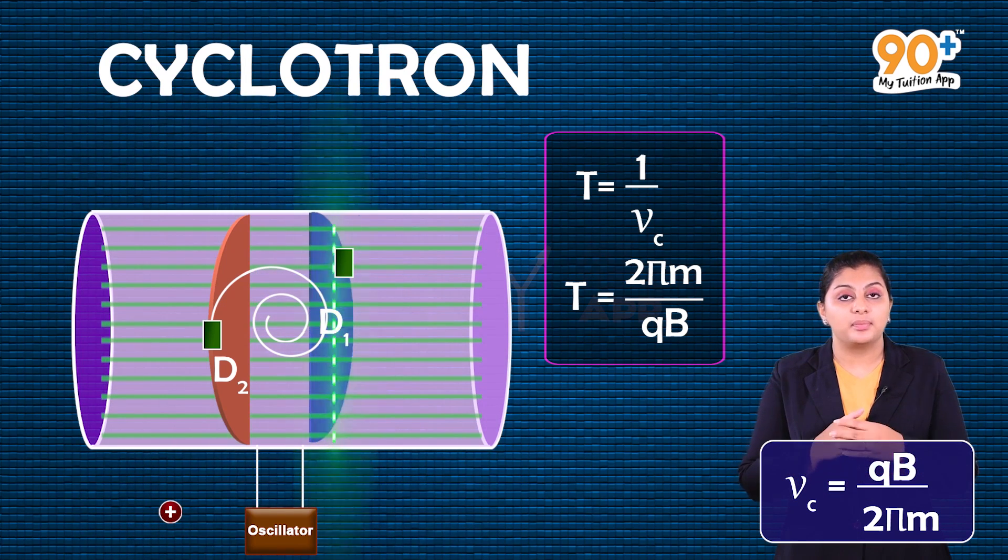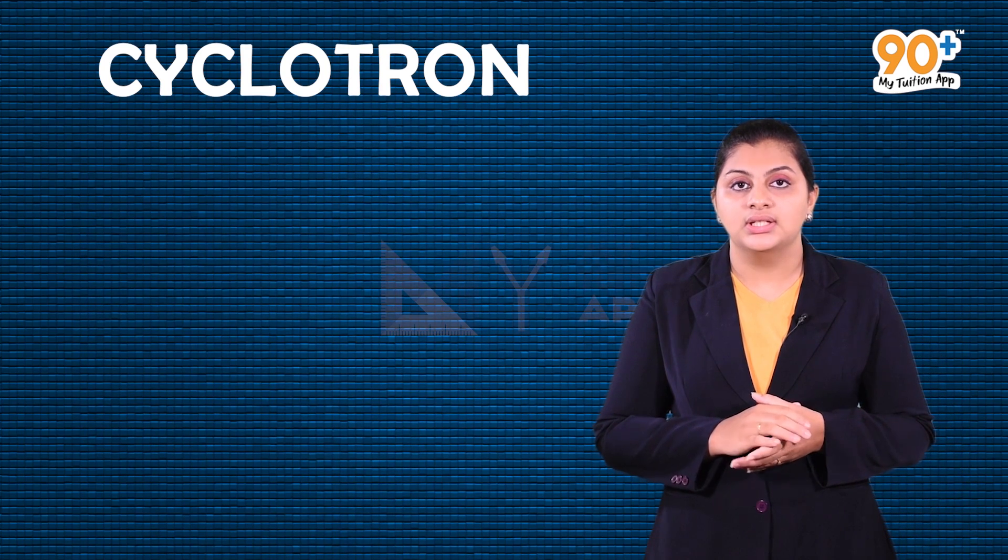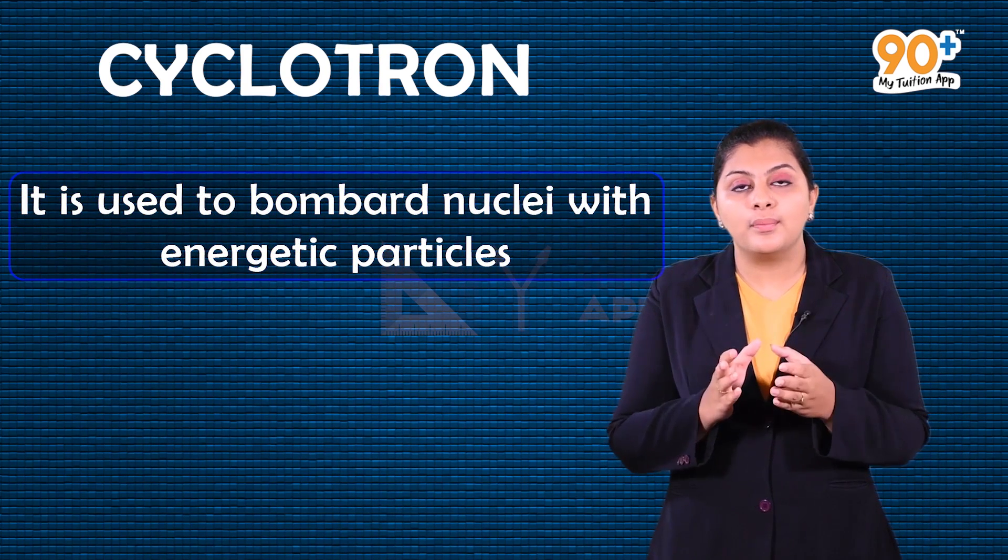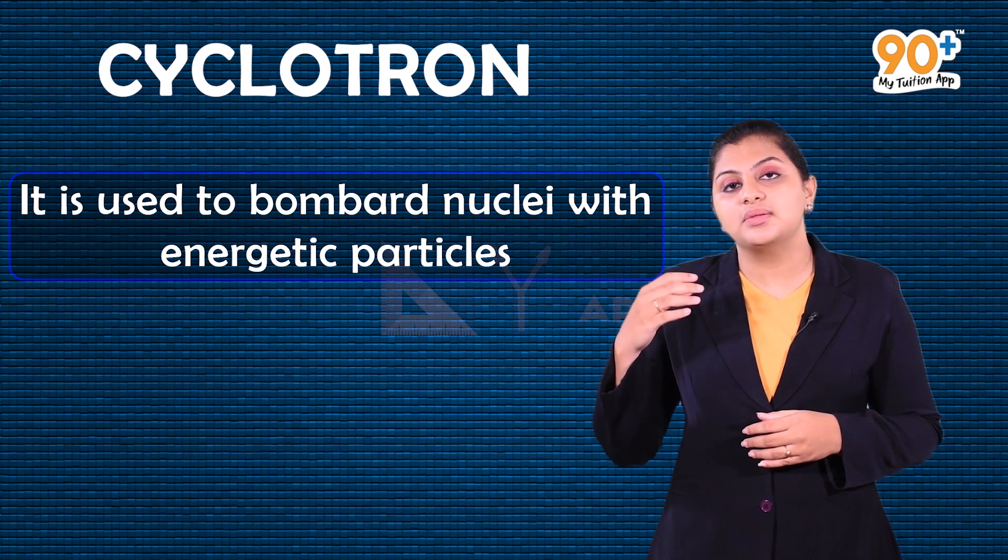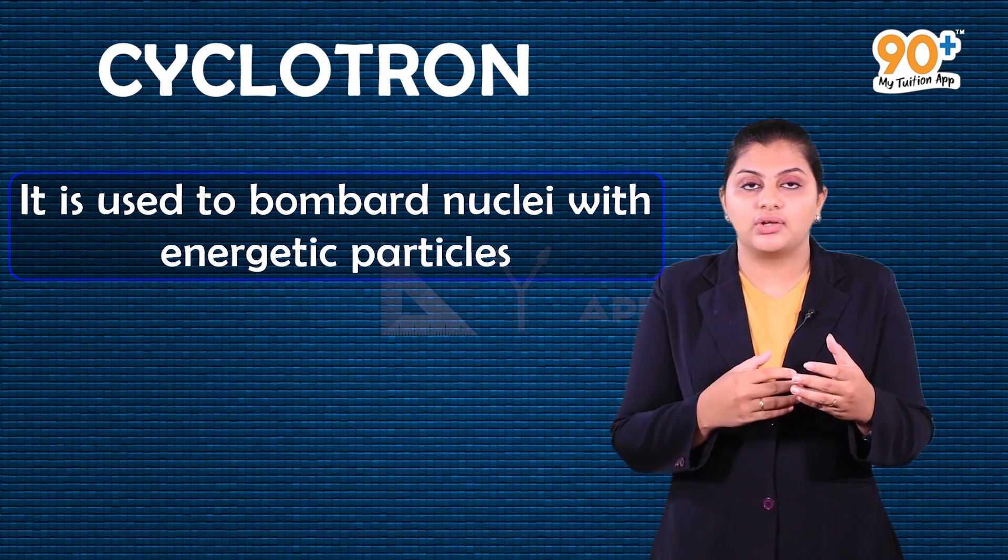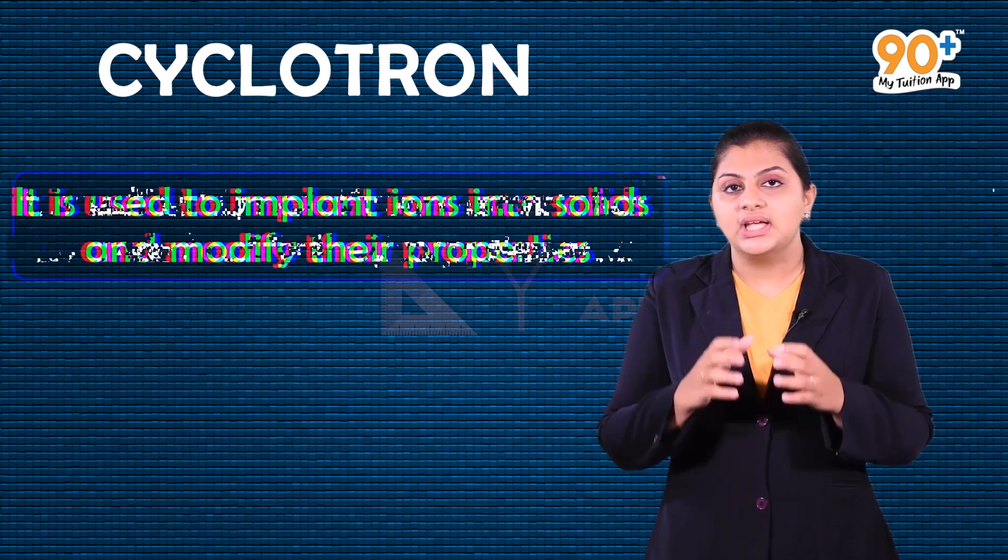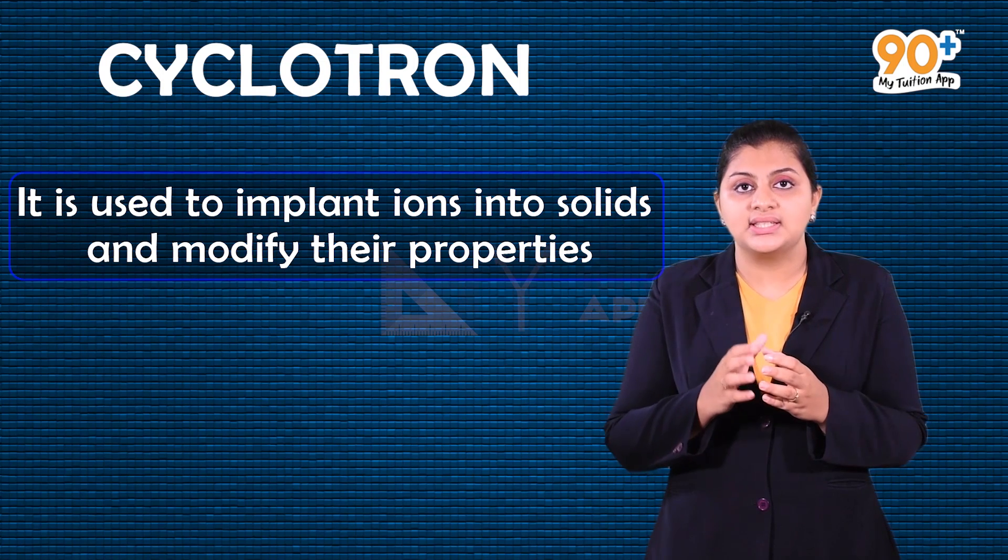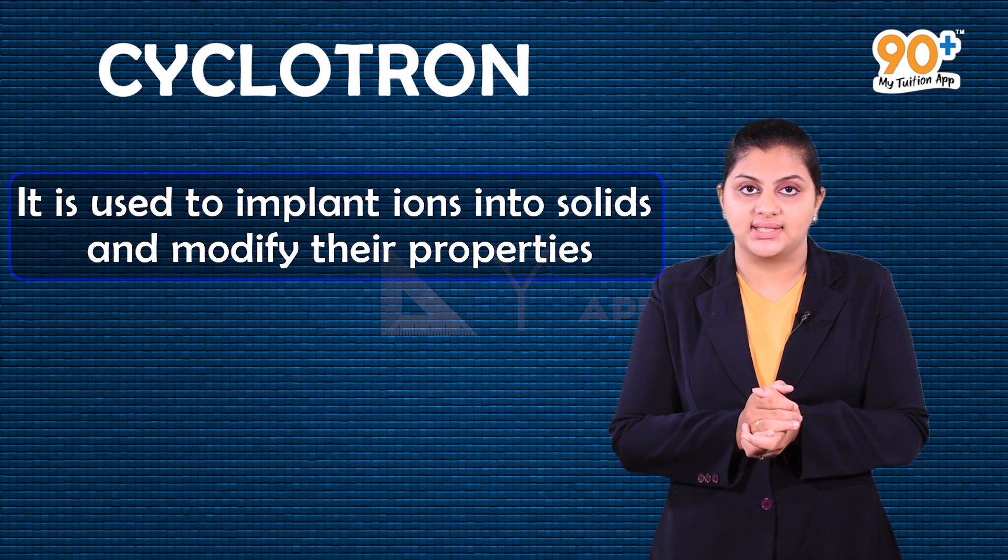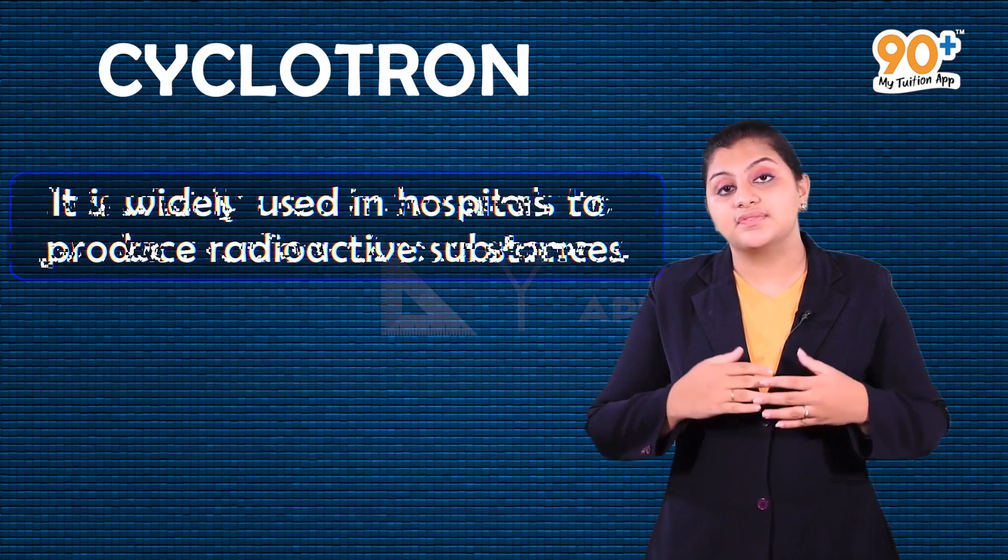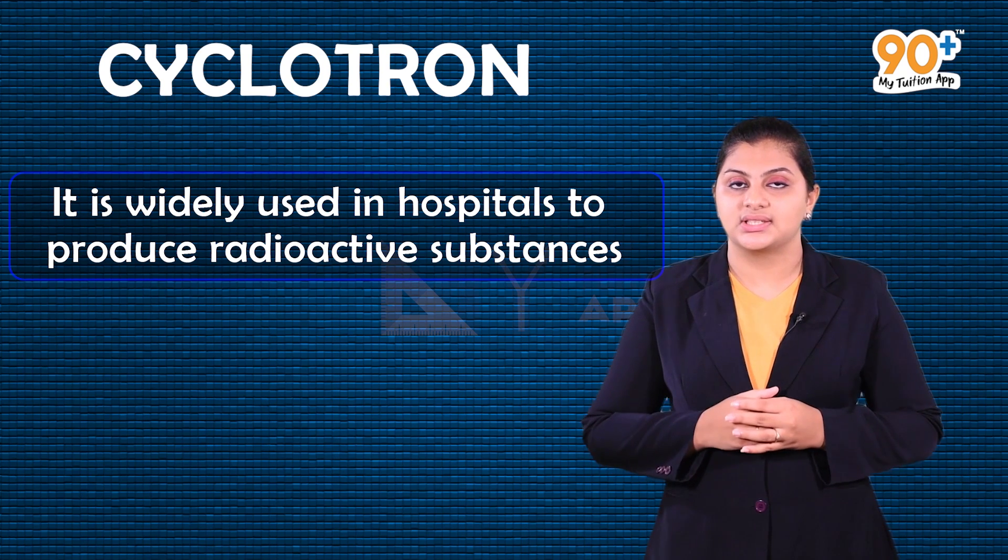Let's look at practical applications of cyclotron. First, it is used to bombard nuclei with energetic particles. Second, it is used to implant ions into solids and modify their properties. And lastly, it is widely used in hospitals to produce radioactive substances.